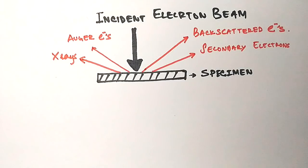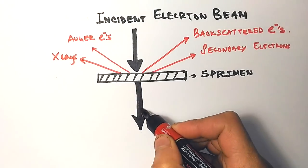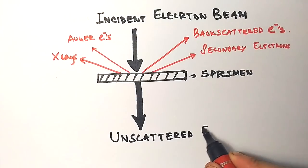Some electrons are reflected back as backscattered electrons, some as secondary electrons, and some as Auger electrons due to the Auger effect. Some are in the form of X-rays or other forms.